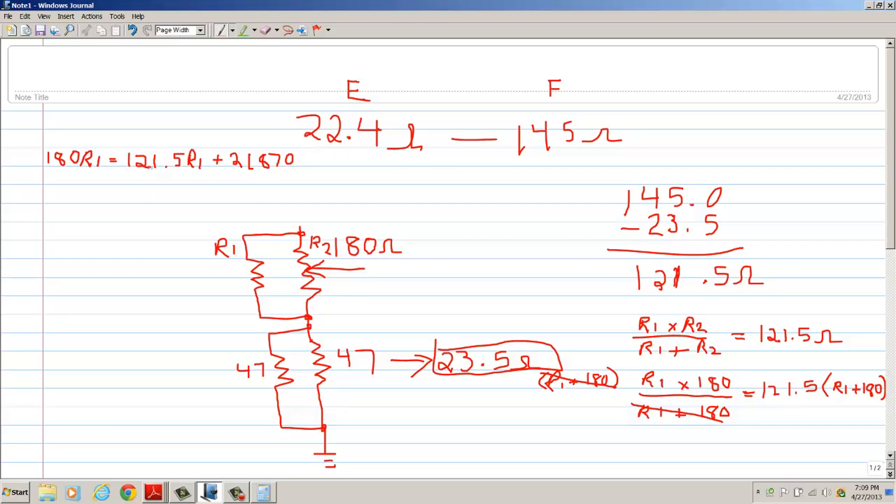Now I'm going to subtract 121.5 R1 from both sides of the equation. So over here I should have 58.5 R1 is equal to 21,870. Dividing both sides of the equation by 58.5, we'll be left with R1 is equal to 373.85 ohms.